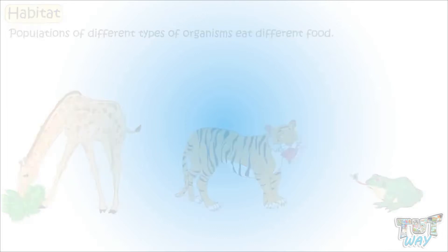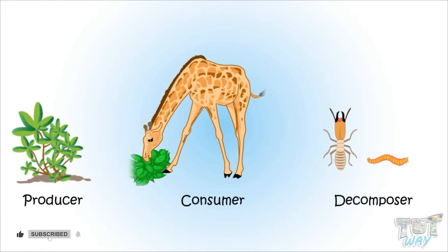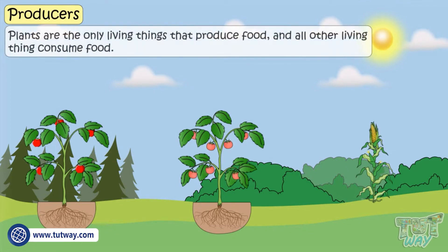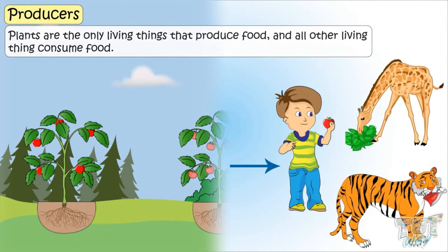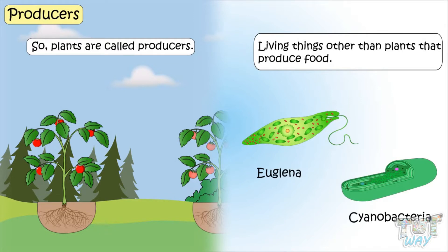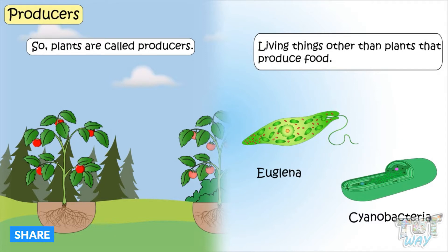First of all, let's see what are producers, consumers and decomposers in a habitat. Plants get energy from sun to carry on the process of photosynthesis and produce food and grow. So plants are the only living things that produce food — rest all living things consume food — so plants are called producers. There are also some other organisms that produce food other than plants, like Euglena and cyanobacteria, which are microorganisms that can produce food through photosynthesis, and they are not plants. They are mainly found in pond water.